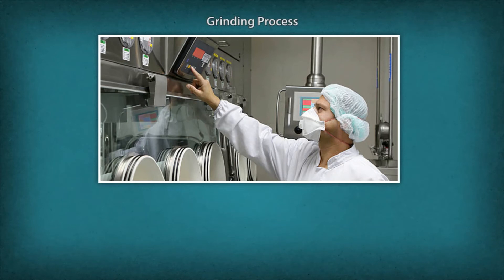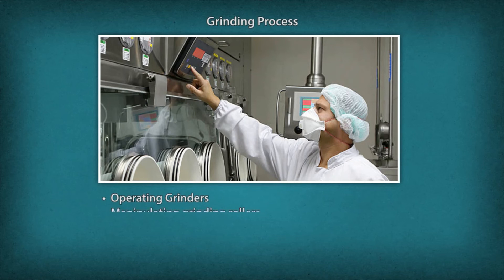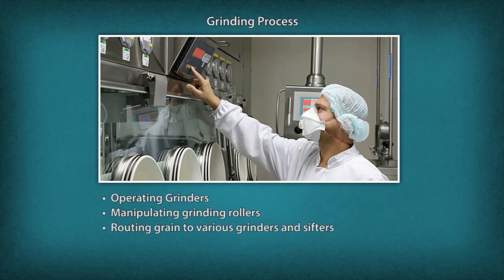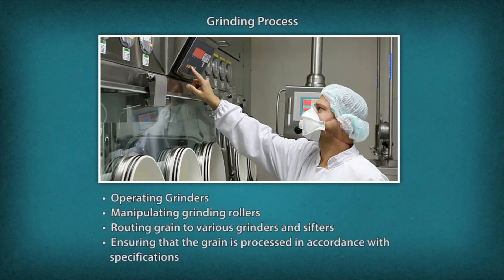Grinding process. A grain mill operator performs the following tasks during the grinding process: Operating grinders to reduce the size of processed grain. Manipulate grinding rollers using hand tools. Routing grain to various grinders and sifters. Manipulate machinery by feeling the grain and ensuring that the grain is processed in accordance with specifications.